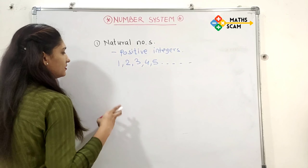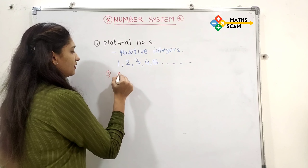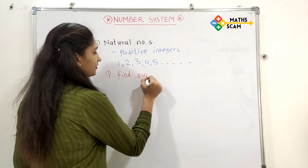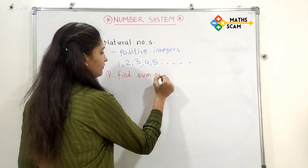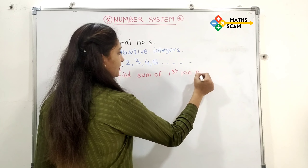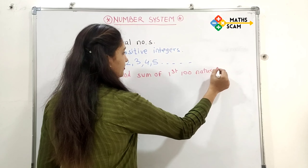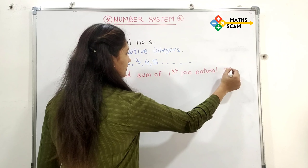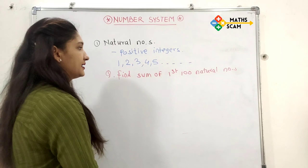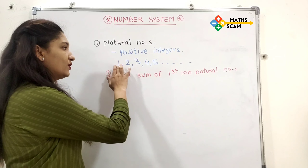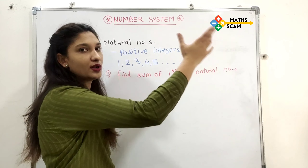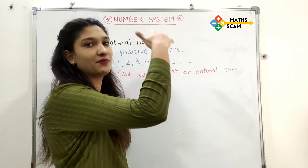What if a question comes: find the sum of the first 100 natural numbers? So, our first 100 natural numbers: 1 plus 2 plus 3 plus 4 plus 5 plus... plus 99 plus 100.